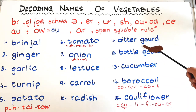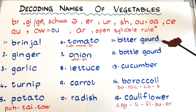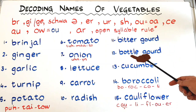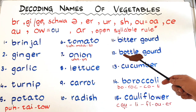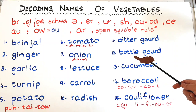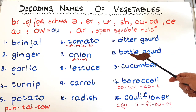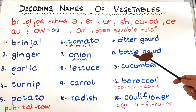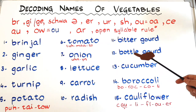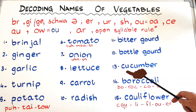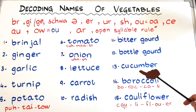In 'bitter gourd', O-U says the long O sound. At number twelve we have bottle gourd. We double the T because if we have a short vowel sound before an L-E ending, we double the consonant. The link for this rule is in the description box. It's 'bottle gourd'.